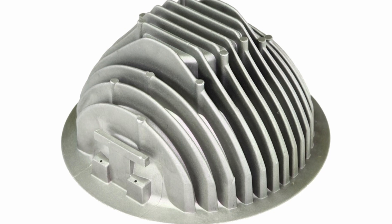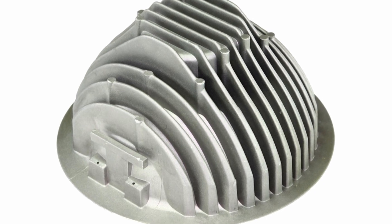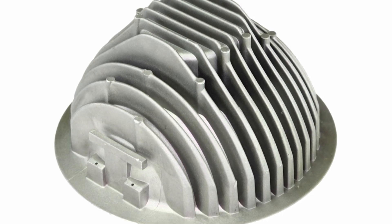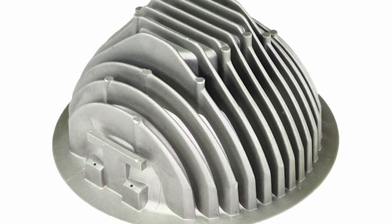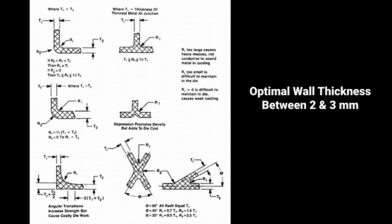Another solution is to consider increasing the wall thicknesses of the part, which gives more room for the material to flow. The optimum wall thickness is between two and three millimetres. So that's the easy one out of the way.